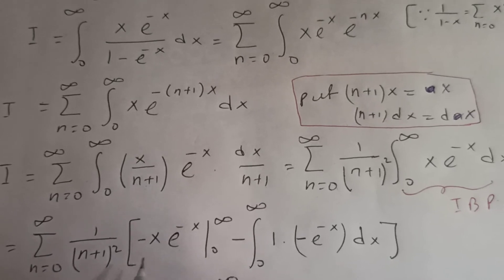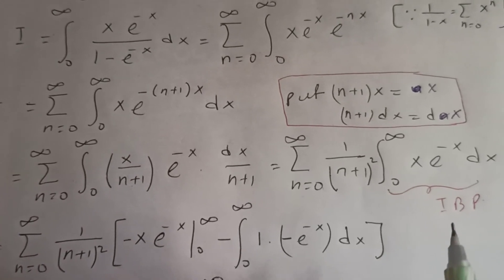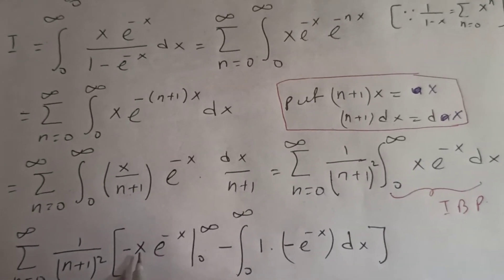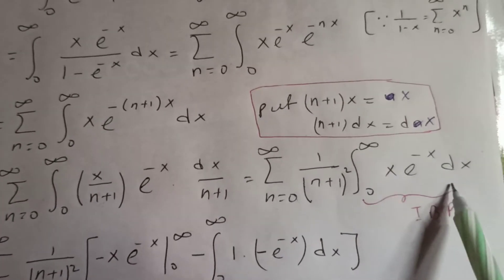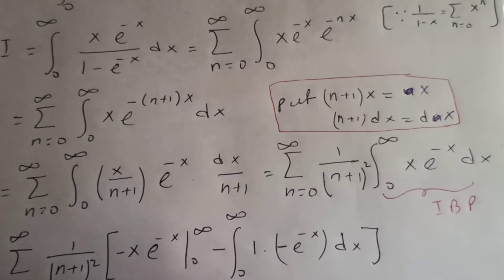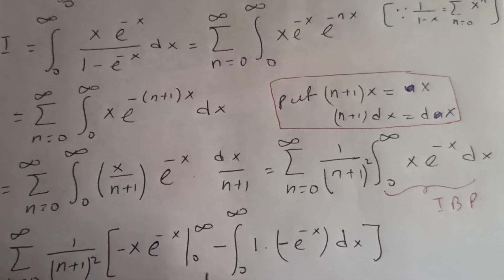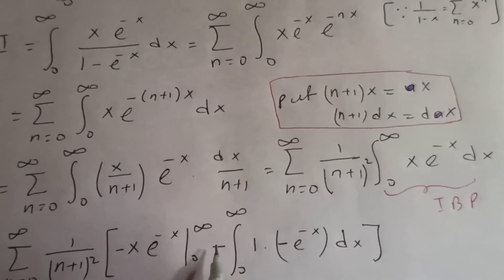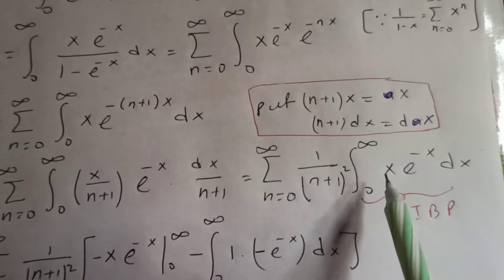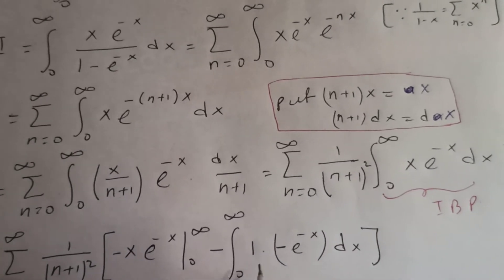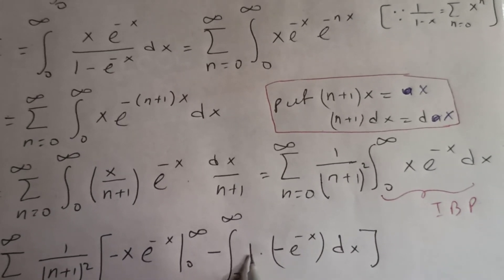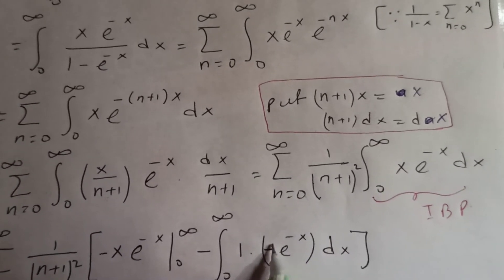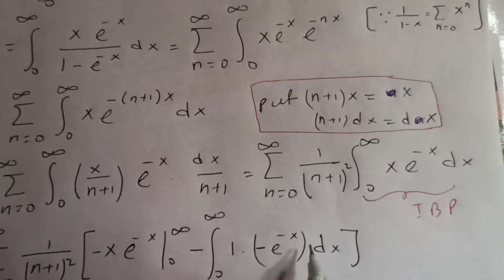The sum from n equal to 0 to infinity of 1 over (n+1)² — taking x as the first function and e^(−x) as the second. The integral of e^(−x) is negative e^(−x). So we have: [x·(−e^(−x))] from 0 to infinity, minus the integral from 0 to infinity of the derivative of x, which is 1, times (−e^(−x)) dx.